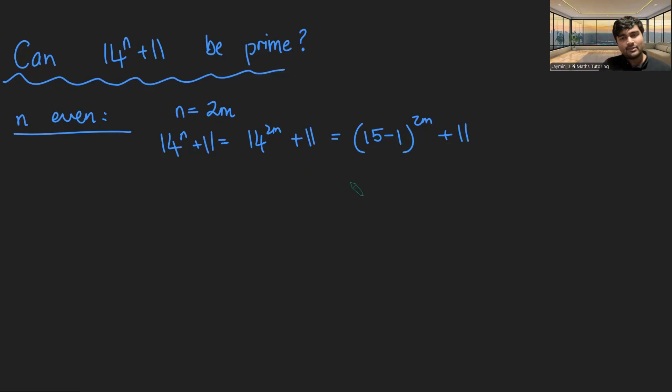And now 15 minus 1 to the 2m, if I think about using a binomial expansion to expand that, it will be 15 to the 2m plus 2m choose 1 times 15 to the 2m minus 1 and so on plus a bunch of other terms. And then the penultimate term would be 2m choose 2m minus 1 times 15 times minus 1 to the 2m minus 1. And then the last term would be plus minus 1 to the 2m.